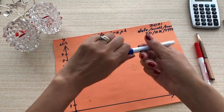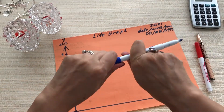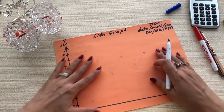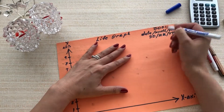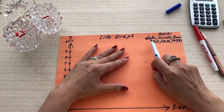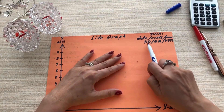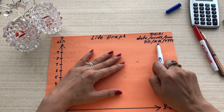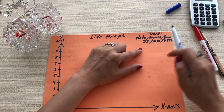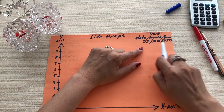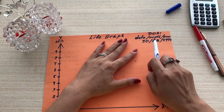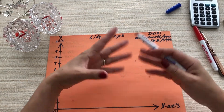Let's get started. What do we need? Only your date of birth. Be careful with this — it's very important. Put your date first, then month, then year. Don't turn it around. I know in the United States they're used to putting the month first, then date, then year — please be careful with that. It has to be date, month, and year. Otherwise your life graph is going to be incorrect.